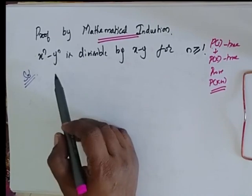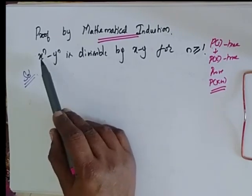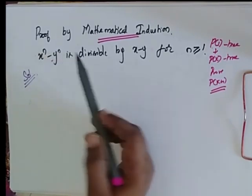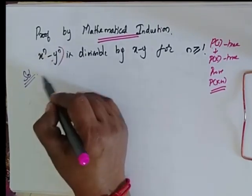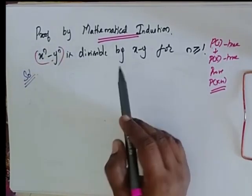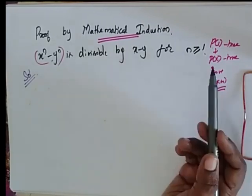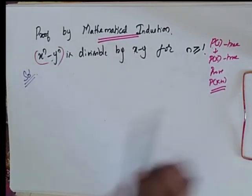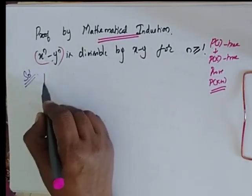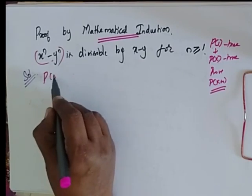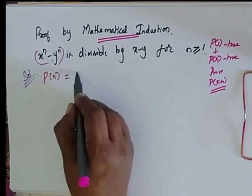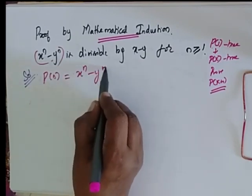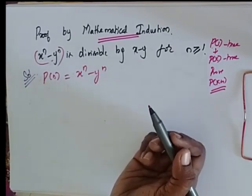We have the problem: x power n minus y power n is divisible by x minus y, for all n greater than or equal to 1. I consider my P of n as x power n minus y power n.